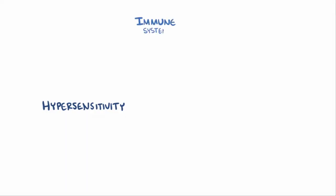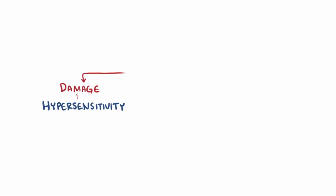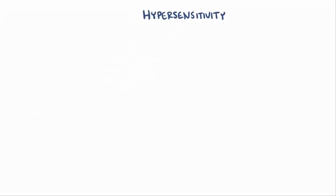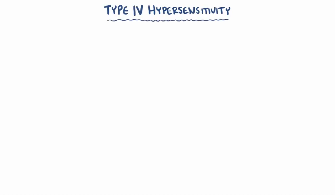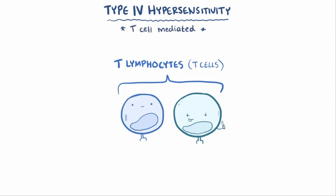Having a hypersensitivity means that someone's immune system has reacted to something in such a way that it ends up damaging them as opposed to protecting them. There are four different types of hypersensitivities, and in type 4, the reactions are caused by T lymphocytes, or T cells, and so type 4 is also sometimes known as T cell mediated hypersensitivity.